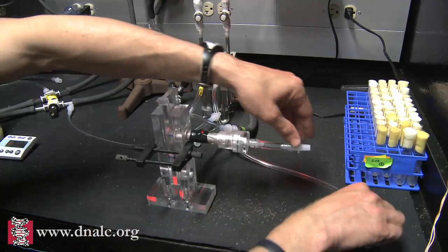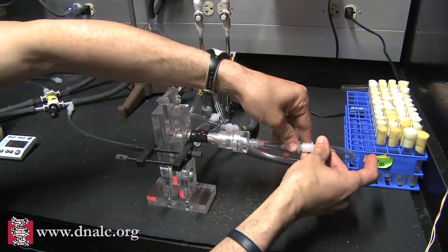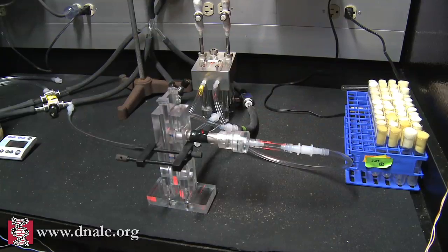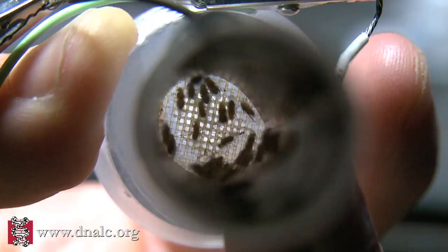After they feel the electric shock while smelling OCT, we give them a second odor, MCH, which smells a little bit like sweaty socks. While they're smelling MCH, there's no shock.